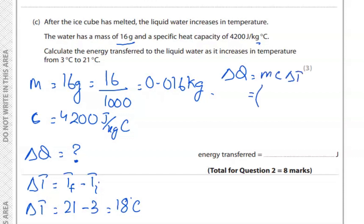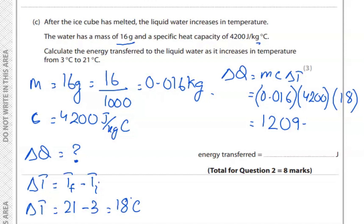Let's substitute all the values. m is 0.016, C is 4200, and delta T is 18 degrees Celsius. After multiplying using the calculator: 0.016 times 4200 times 18 gives 1209.6 joules, which you can round off to 1200 joules. So the energy transferred is 1200 joules.